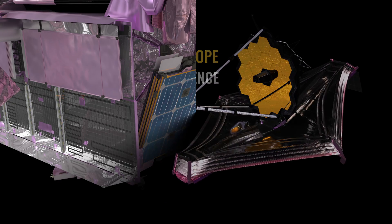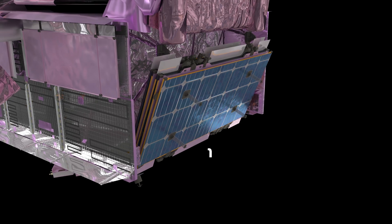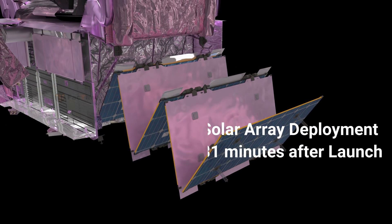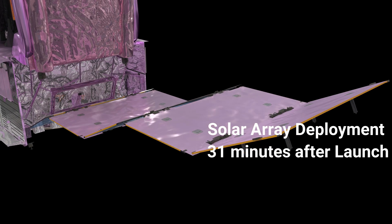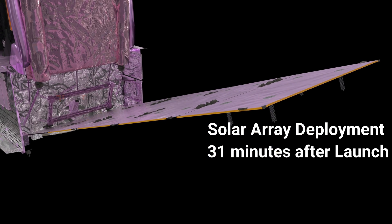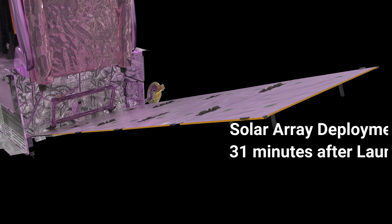The Webb solar array is released and deployed 31 minutes after launch.